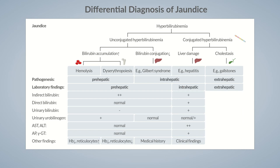In extrahepatic jaundice, there is cholestasis — a condition in which bile flow from the liver to the bowel is slowed or blocked. There is a significant elevation of serum direct bilirubin levels because bilirubin conjugation in the hepatocytes isn't impaired. As a result of the blocked excretion of direct bilirubin, extrahepatic jaundice usually results in the highest bilirubin levels of the three main types, with serum bilirubin levels rising up to 30 mg per deciliter, compared to prehepatic jaundice where levels rarely exceed 10 mg per deciliter.